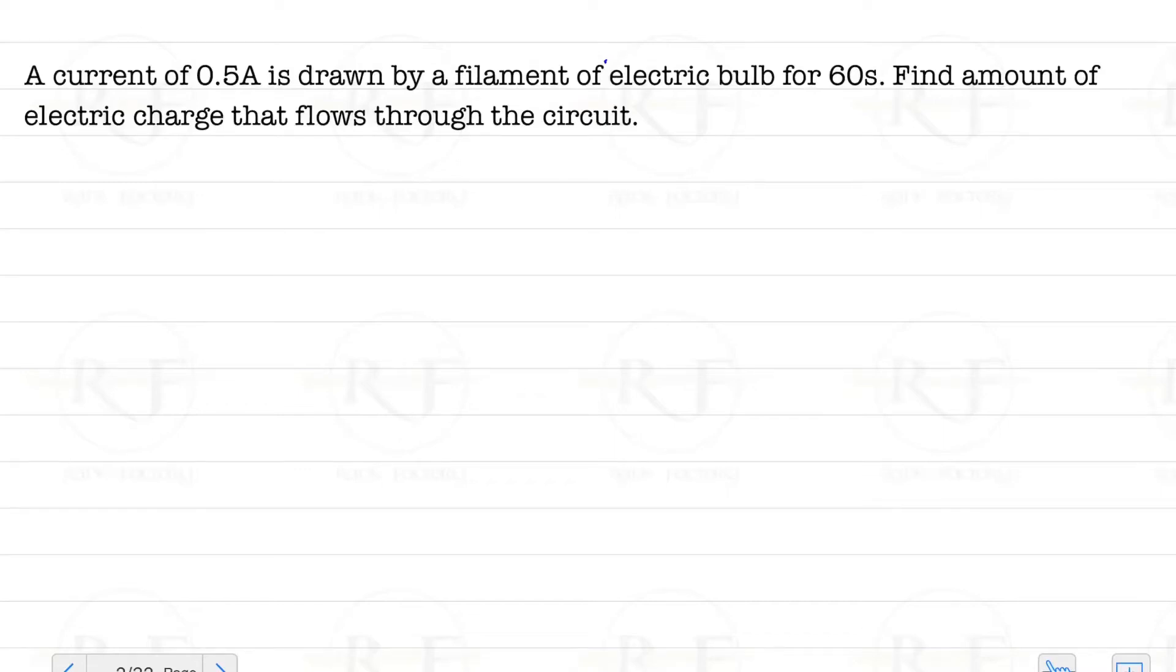Hello students, we are discussing the question: A current of 0.5 ampere is drawn by a filament of electric bulb for 60 seconds. Find the amount of electric charge that flows through the circuit. Now we need to first